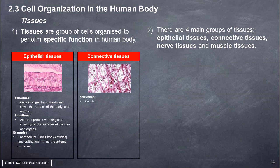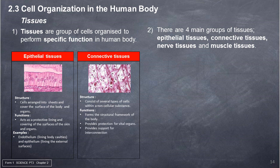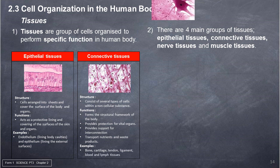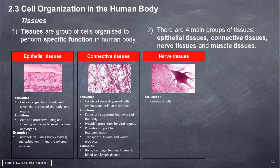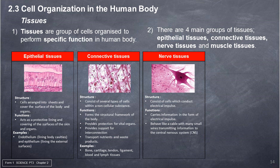Connective tissues — structure: consist of several types of cells within a non-cellular substance. Functions: forms the structural framework of the body; provides protection for vital organs; provides support for interconnection; transports nutrients and waste products. Examples: bone, cartilage, tendon, ligament, blood, and lymph tissues. Nerve tissues — structure: consist of cells which conduct electrical impulses. Functions: carries information in the form of electrical impulses; behaves like a cable with many small wires transmitting information to the central nervous system (CNS) and from the CNS to different parts of the body. Examples: nerve tissues in the brain and spinal cord.